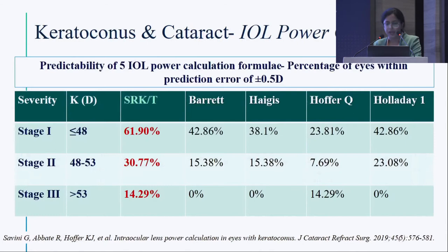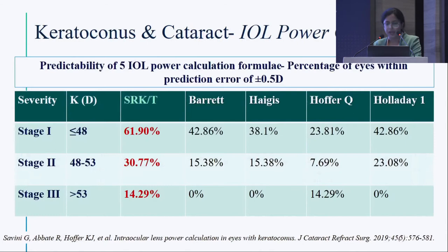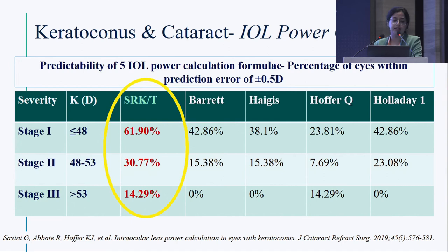A study by Savini et al. evaluated the predictability of five different IOL power calculation formulas, reporting prediction error of ±0.5 diopter. With SRKT, 61.9% of stage 1 keratoconus patients were within ±0.5 D, which was higher than Barrett or Holladay — both of which were inferior to SRKT in this study.